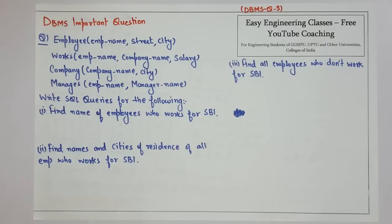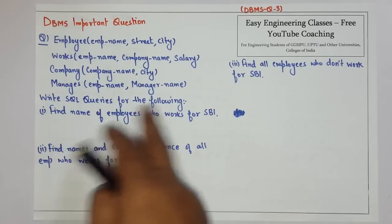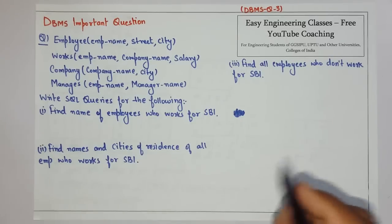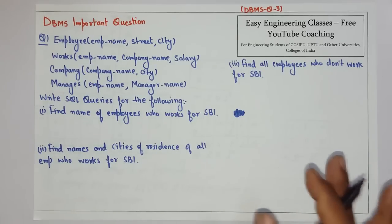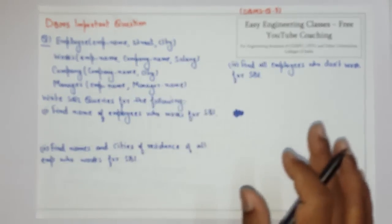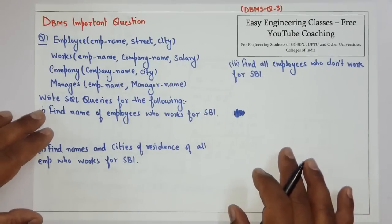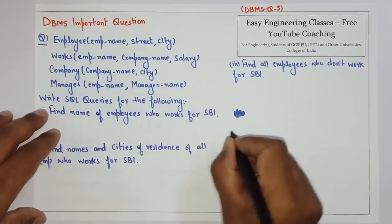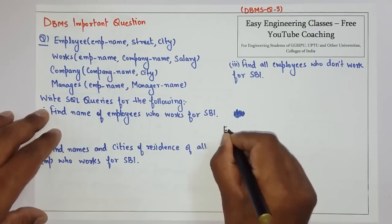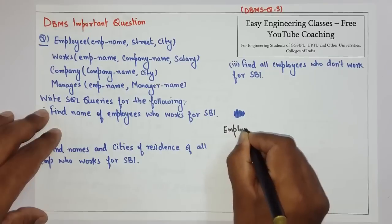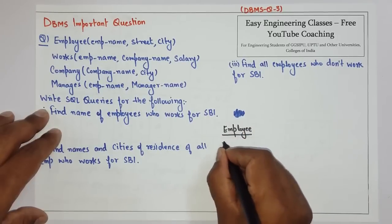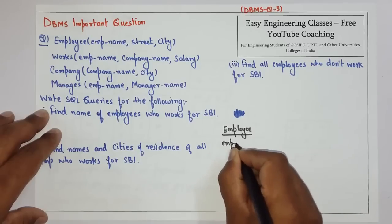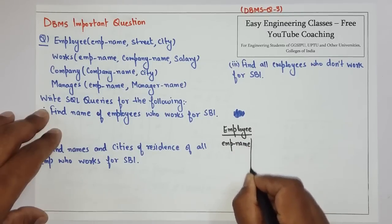Hello everyone. Here is a question of SQL where some relations are given and we have to solve SQL queries. I always suggest to students: whenever there is a question of SQL, first create a dummy table. It will take 2 or 3 minutes to create a table and enter some dummy data, but it will help you get the desired result.